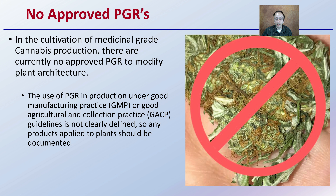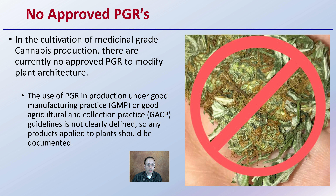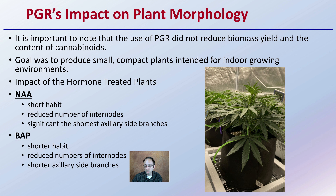A word of caution: there are no approved PGRs for the cultivation of medicinal grade cannabis production. This study was really just showing that. PGRs in production under good manufacturing practice, typically abbreviated GMP, or good agriculture and collection practice (GACP) guidelines are not clearly defined. Any products applied to the plants should be documented. There are different rules and always changing laws, but documentation is essential. As of right now, there are no approved PGRs for cannabis applications.